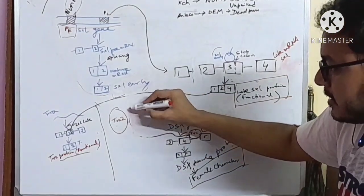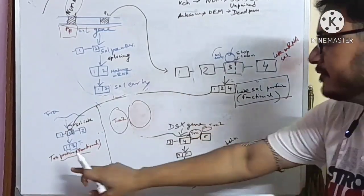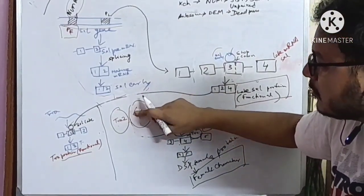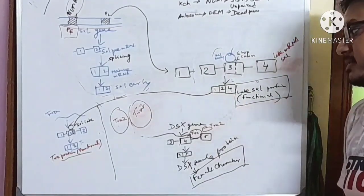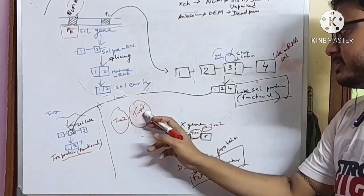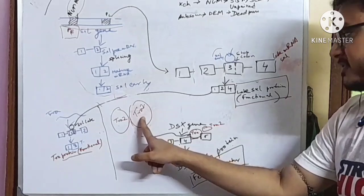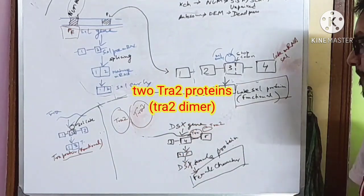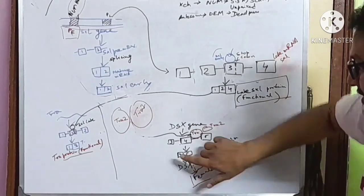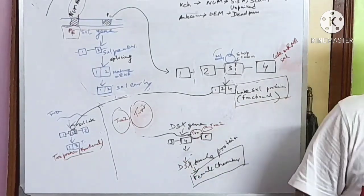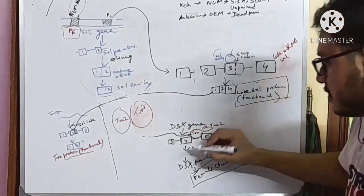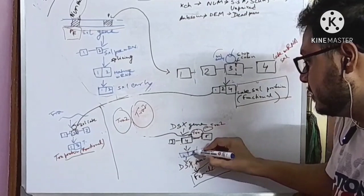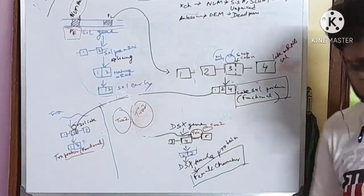In males, in the place of TRA protein, TRA2 dimers are formed. Now, these TRA2 dimers, this dimer of TRA2 protein binds with the product of DSX gene. And after the binding with it, it cuts the fourth exon and produces DSX male protein.